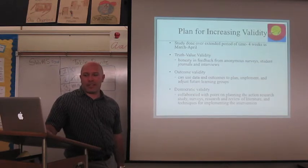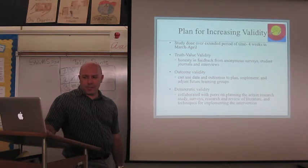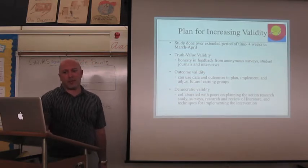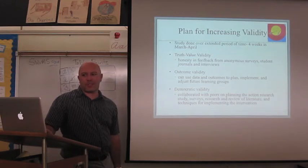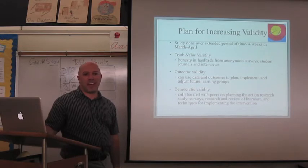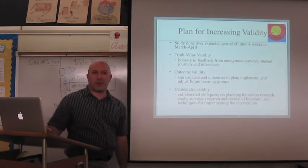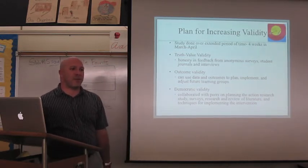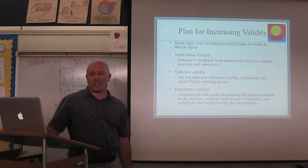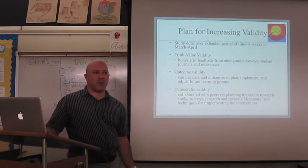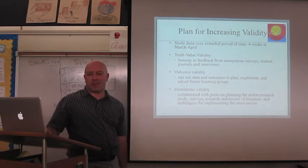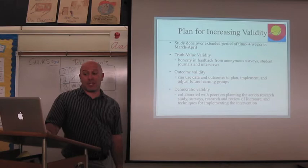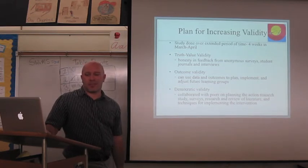The plan for increasing validity, this was done over a four-week period in March and April. There were three types of validity that I used. Truth-value validity is where there's honesty and feedback from the students, so that when you're administering surveys that are anonymous, they're more likely to give you an honest answer, and knowing that there's no repercussions for saying something that they might think will hurt their grade. So I was able to get honest feedback from the students.